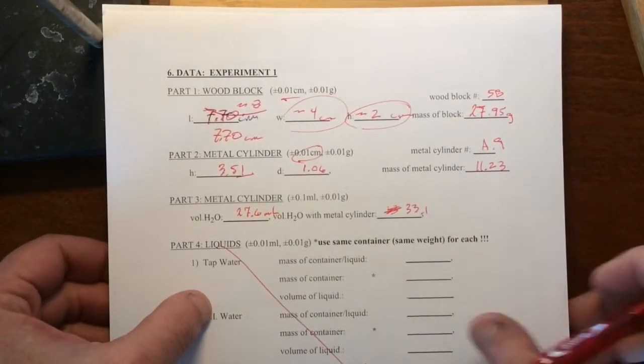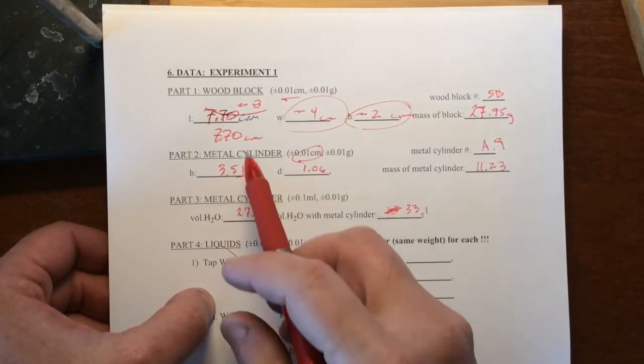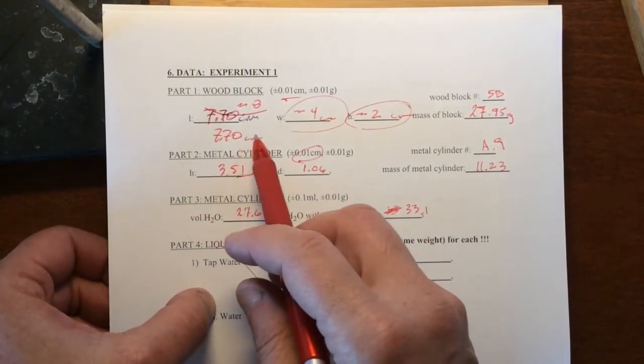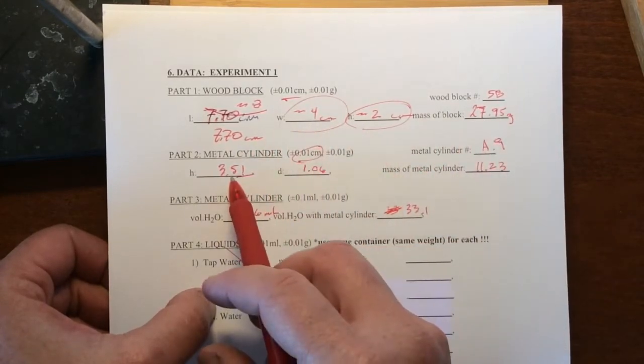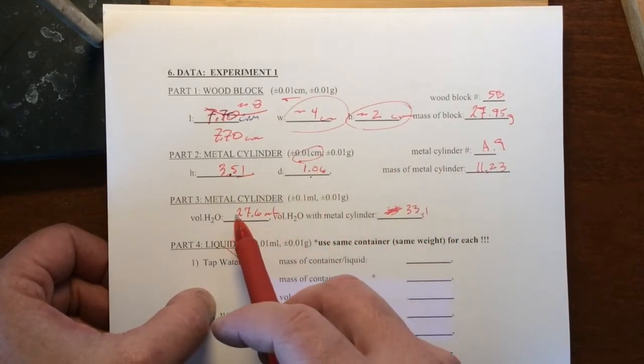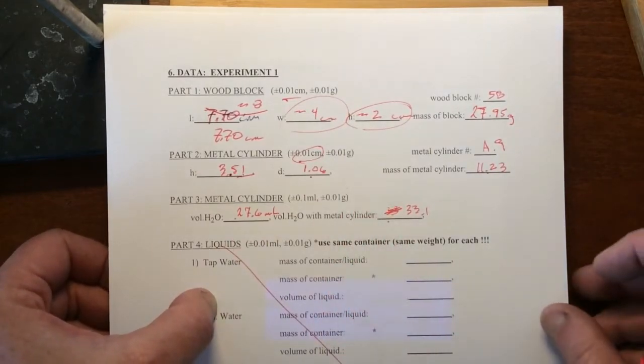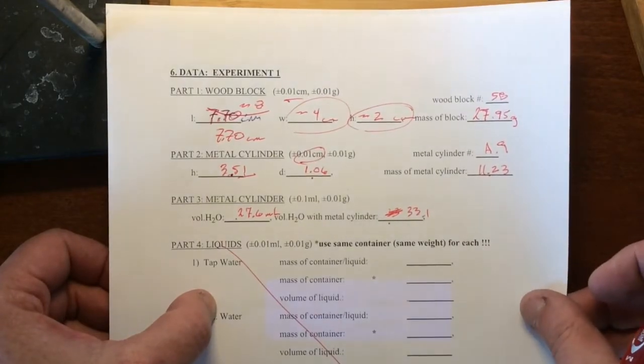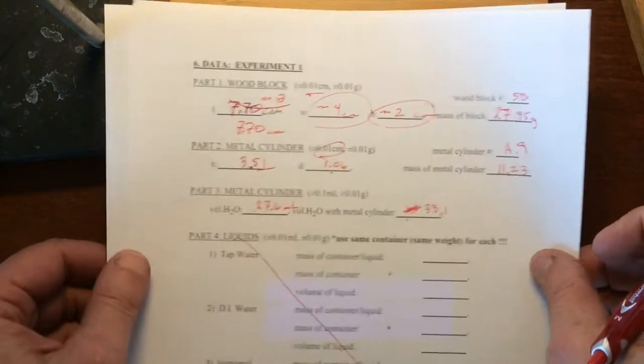I've been terribly sloppy on my data sheet. Hopefully you guys are neater. But you guys read the dimensions of the wooden block, we got its mass. We read the dimensions of the metal cylinder, have its mass. And then finally we measured the initial and final volume of the graduated cylinder. The difference of which will give us the volume of that metal cylinder by water displacement.